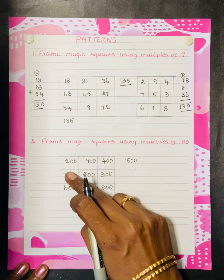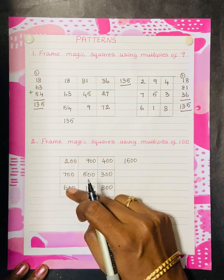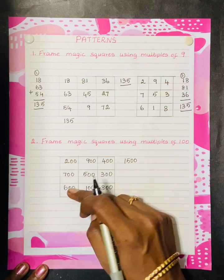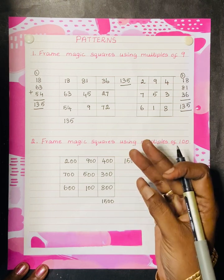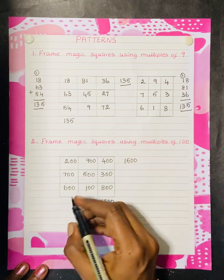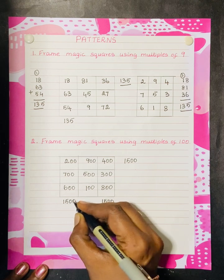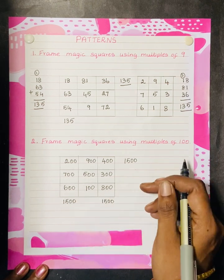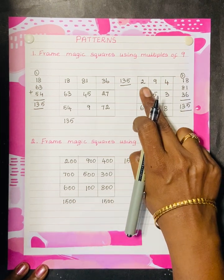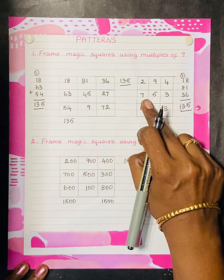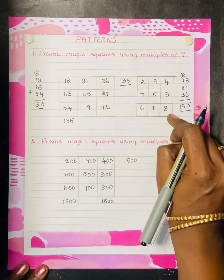So it is the magic square. You have to remember this number alone: 2, 9, 4, 7, 5, 3, 6, 1, 8.